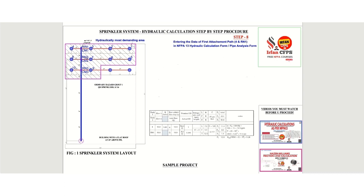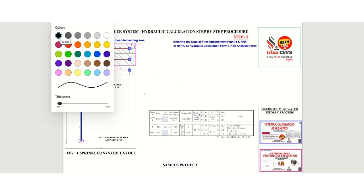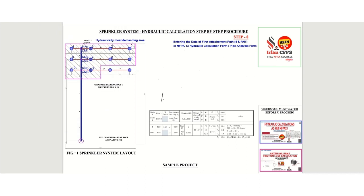Now we will draw the isometric. This will be the flange, gate, wall check. We have one point here, the second rise will be here, and the third will be here. I'm going to draw the sprinkler — this is node 4 and this is RN1. We will take only this particular section and enter the data in the pipe analysis or hydraulic calculation form.